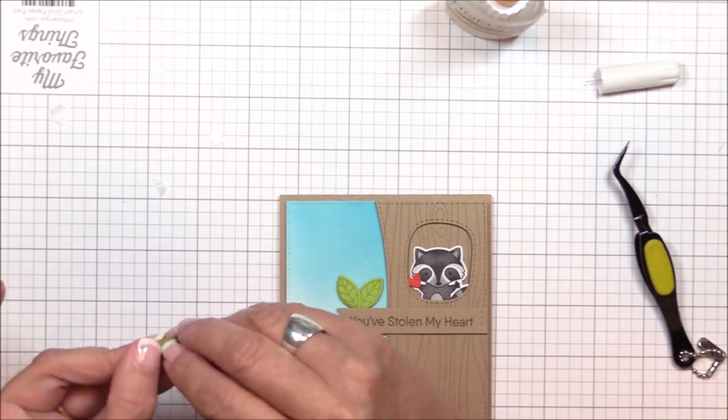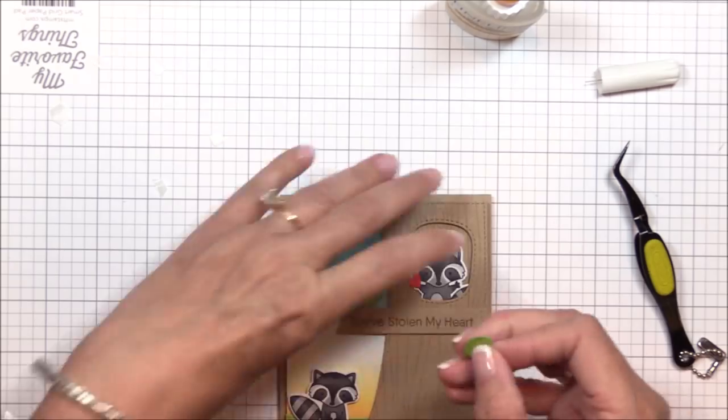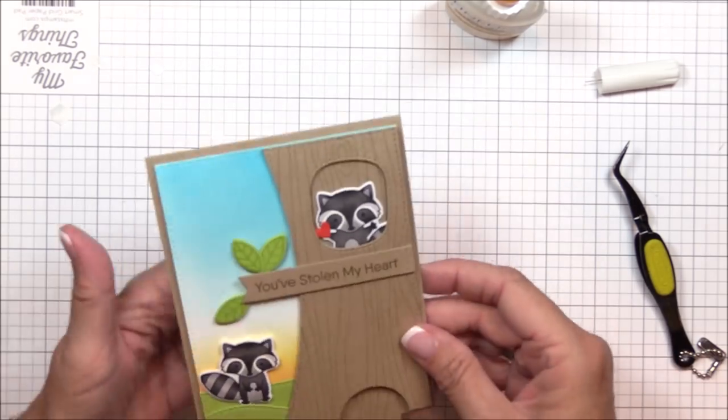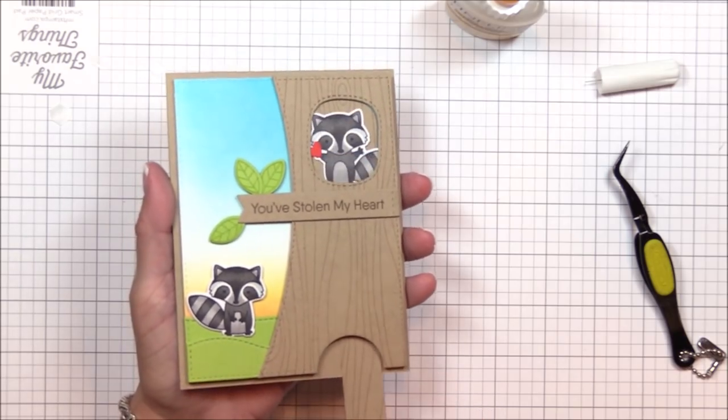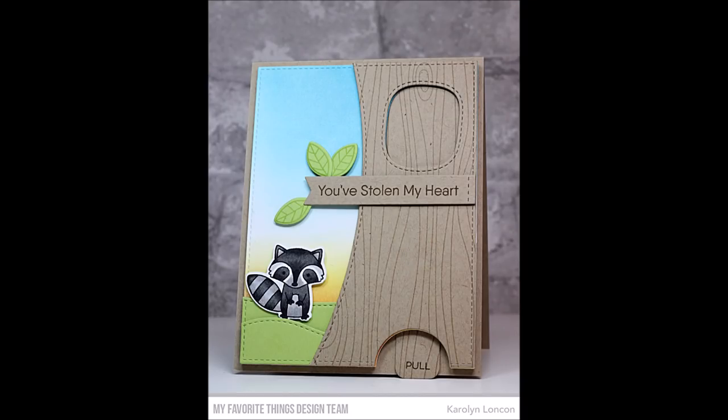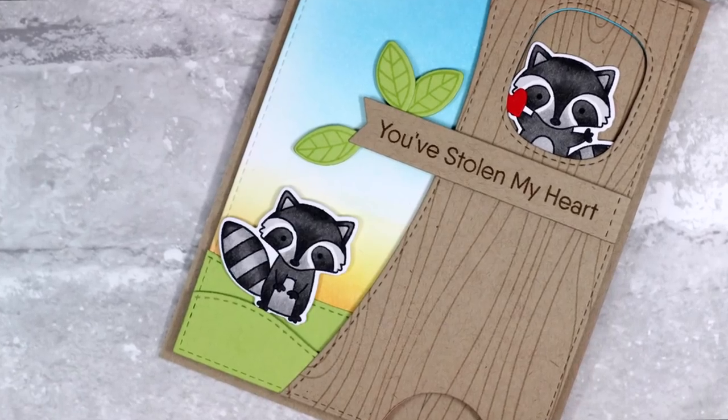And that'll do it for our scene building. How stinking cute is that little raccoon as he pops up through that nut hole window. I'm so excited for the potential that the new double slider loop slots dies have for future crafting, and the ease that they'll provide me when building these types of interactive cards. Leave it to MFT to make my crafting life easier.